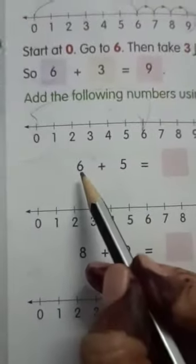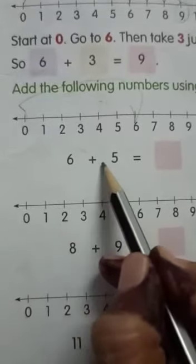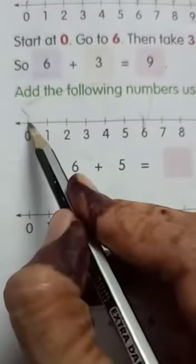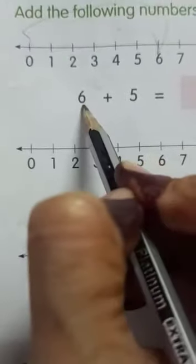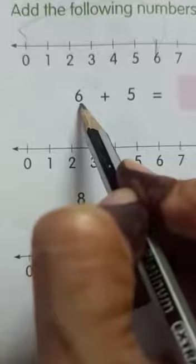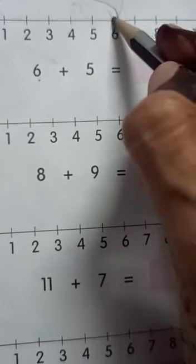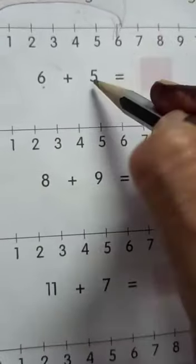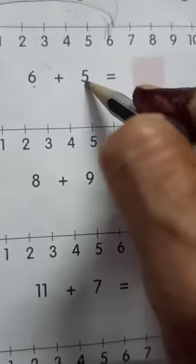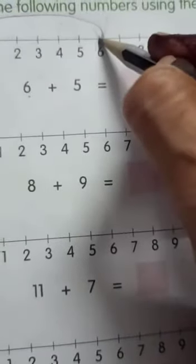Now, see here. Here we have to add 6 and 5. So, first start at 0 and then go to 6. Why? Because we have 6 on the first place. So, we took direct step on 6. Next, how many we have to add to 6? 5. Take 5 forward jumps.